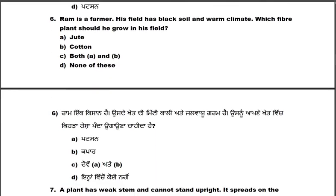Sixth question: Ram is a farmer. His field has black soil and warm climate. Which fiber plant should he grow in his field? Options: jute, cotton, both A and B, or none of these.